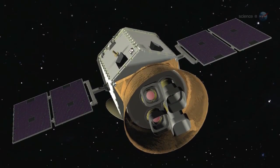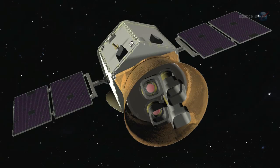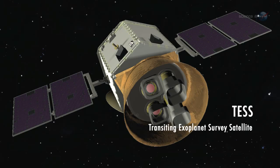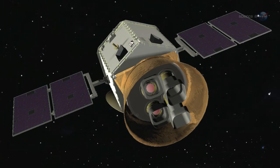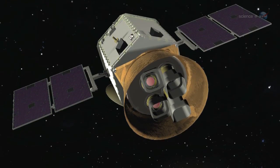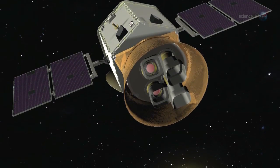NASA is also considering an observatory named TESS, the Transiting Exoplanet Survey Satellite. Supported in part by Google, the MIT-led mission is specifically designed to find exoplanets in the local galactic neighborhood.